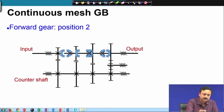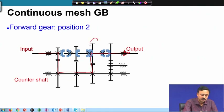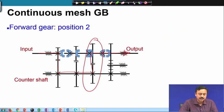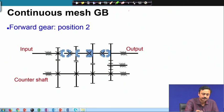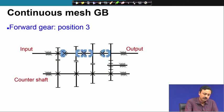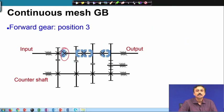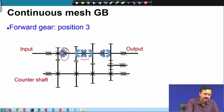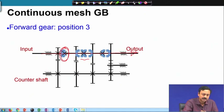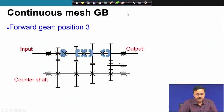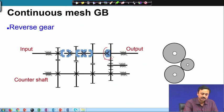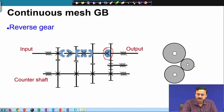Our transmission path then becomes this. The gearing ratio of this pair of meshing gears decides the net transmission ratio of the gearbox. Similarly, if you engage this dog clutch and free the other, the input shaft is directly connected to the output shaft — that is a direct transmission. And if you engage the reverse clutch, you have the reverse gear transmission because of the intermediate gear.